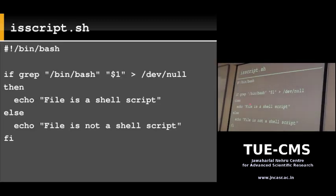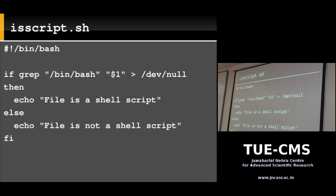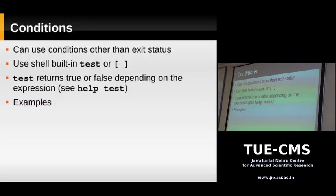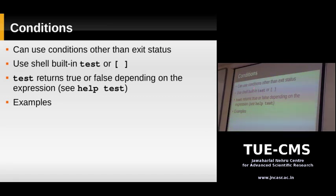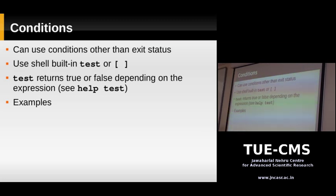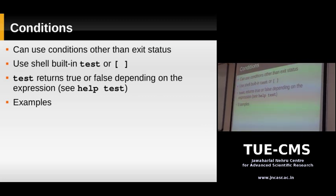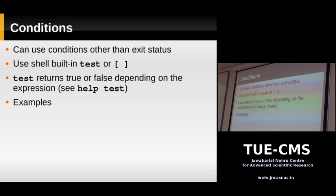In that example we used a command as the if condition, which works via its exit status. We can also use other conditions with the test command or the bracket [ ] construct — these two are exactly equivalent. The test command evaluates an expression and returns zero if true, non-zero if false. The same applies to brackets: [ condition ] returns zero if true. The if just operates on the returned exit status.